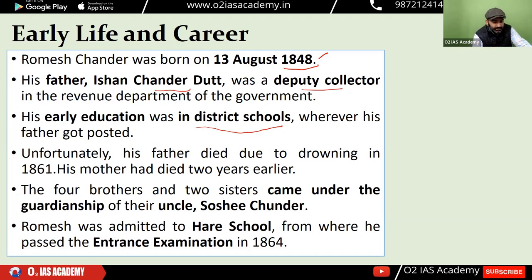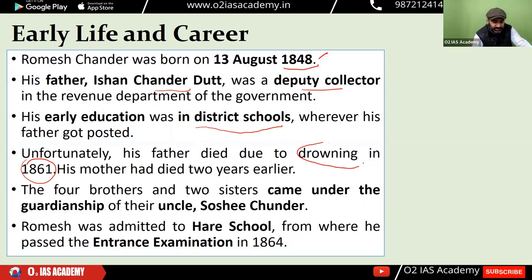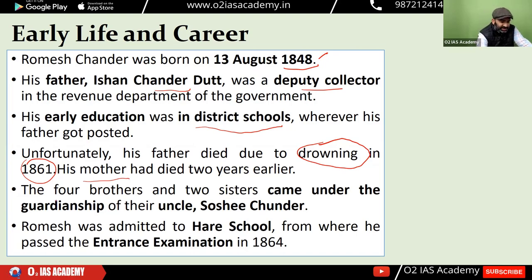In 1861, there was a tragic incident in his life — his father died in a drowning incident. So he became an orphan. There were four brothers and sisters, and including step-siblings, there were a total of six brothers and sisters.